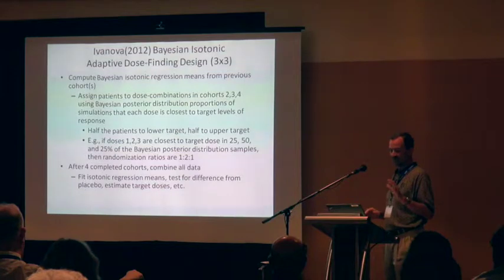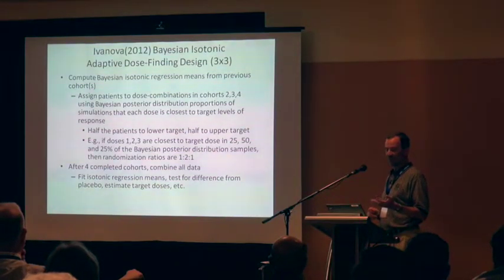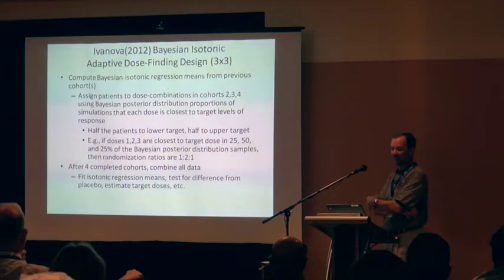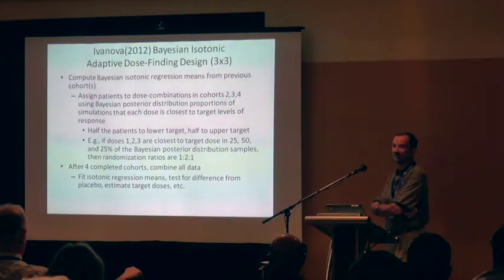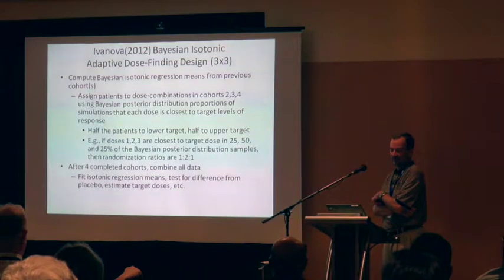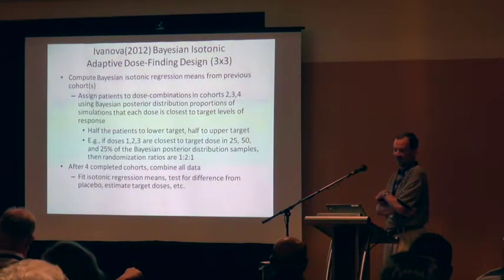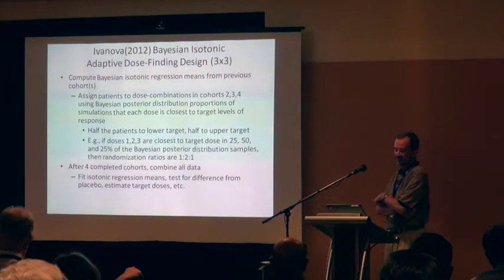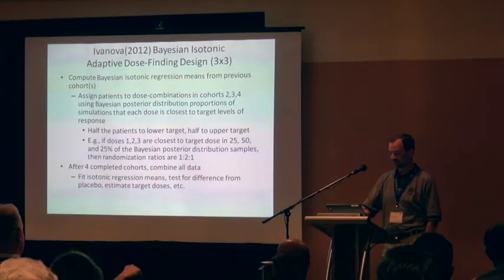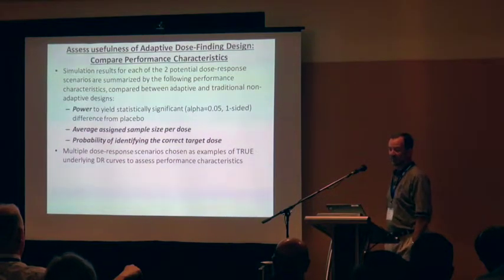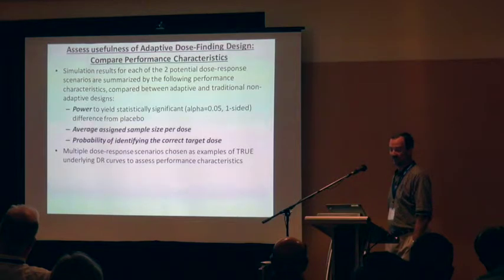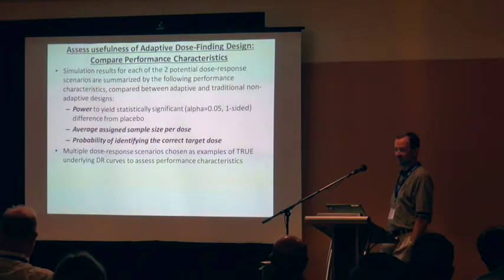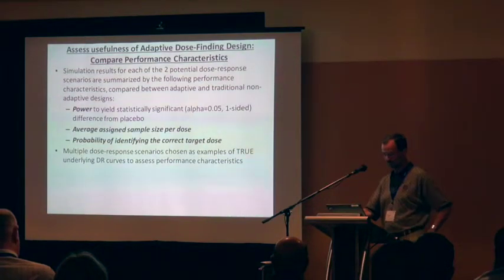For example, if doses 1, 2, and 3 are closest to the target in 25, 50, and 25 percent of the posterior distribution samples, then the randomization ratios are 1 to 2 to 1 to those doses. After the four cohorts are simulated and doses assigned adaptively for cohorts 2, 3, and 4, we fit isotonic regression means and test for difference from placebo and estimate the target doses. Performance characteristics assessed include power, average sample size per dose relative to the target level of response, and probability of identifying the correct target dose.